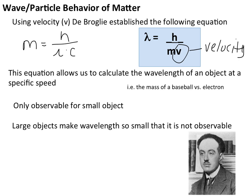So we're not referring to frequency here. We're referring to velocity. He manipulated this equation and substituted in velocity v. Basically, this equation allows us to calculate the wavelength of an object at a specific speed.